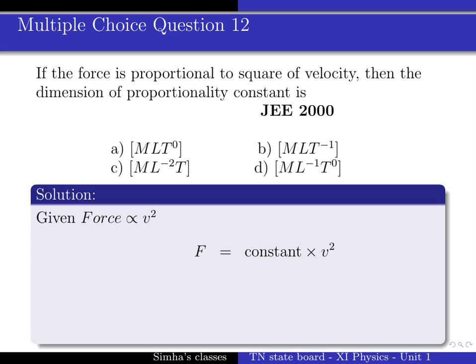In the equation, constant is in the right-hand side, so I bring this v square to the left-hand side, so it comes to the denominator. So the proportionality constant is equal to force divided by velocity square.